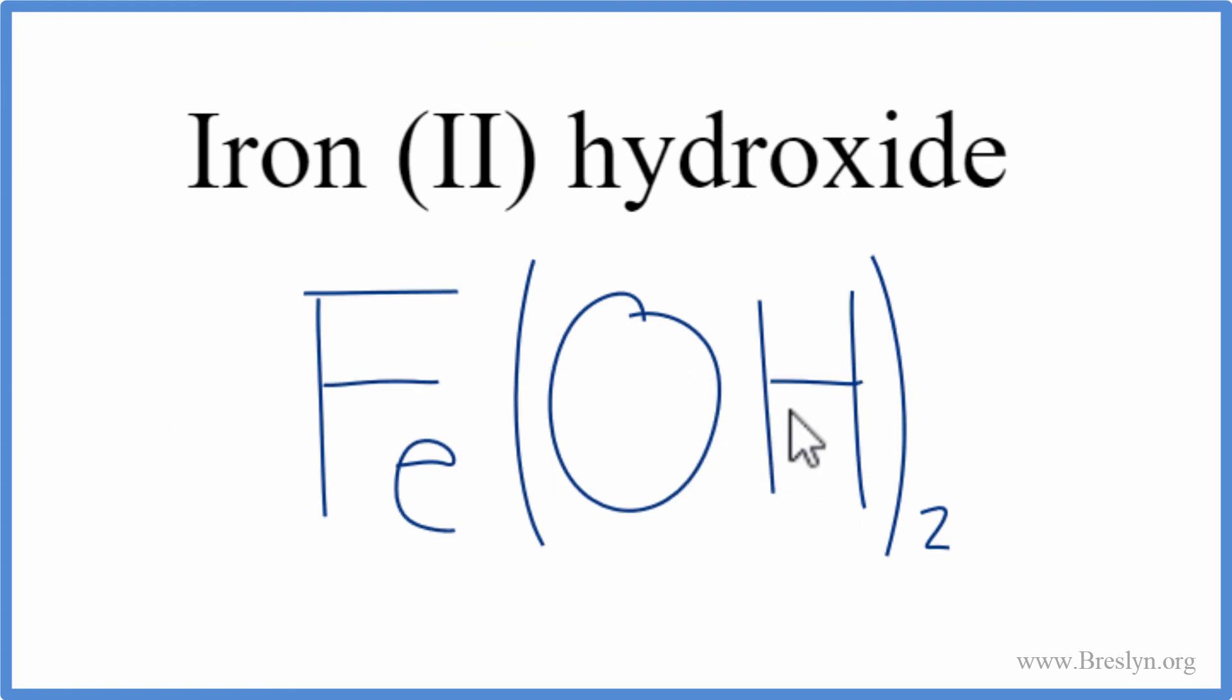Let's clean it up. And that's the formula for iron (II) hydroxide, Fe(OH)2. This is Dr. B, and thanks for watching.